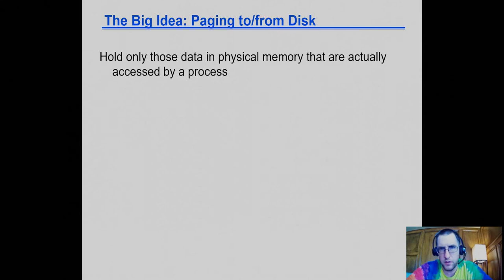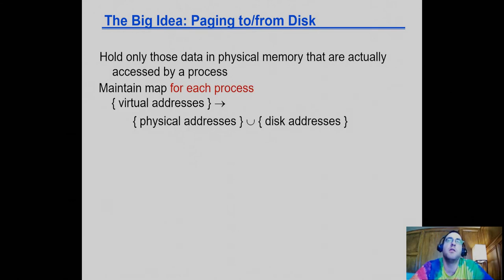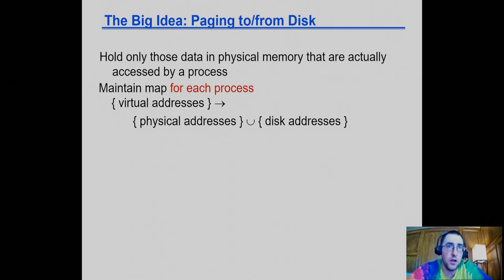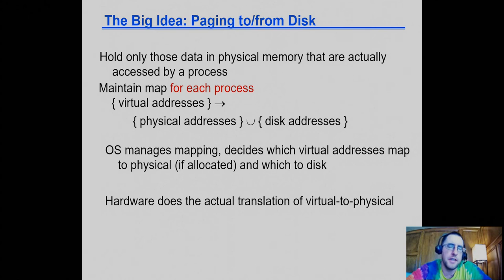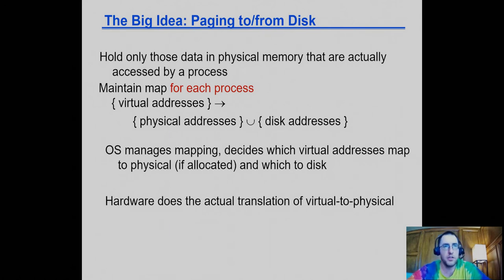We're going to talk about page-based virtual memory — that's the dominant approach today, though there are still some remnants of older technology like segmentation in the x86 processor family. The idea of paging is a way to solve the problem of translating virtual addresses to physical addresses. A page is a block in virtual memory, much larger than a cache block. Virtual addresses may be mapped to either physical addresses of main memory or disk addresses, and the operating system manages those maps.